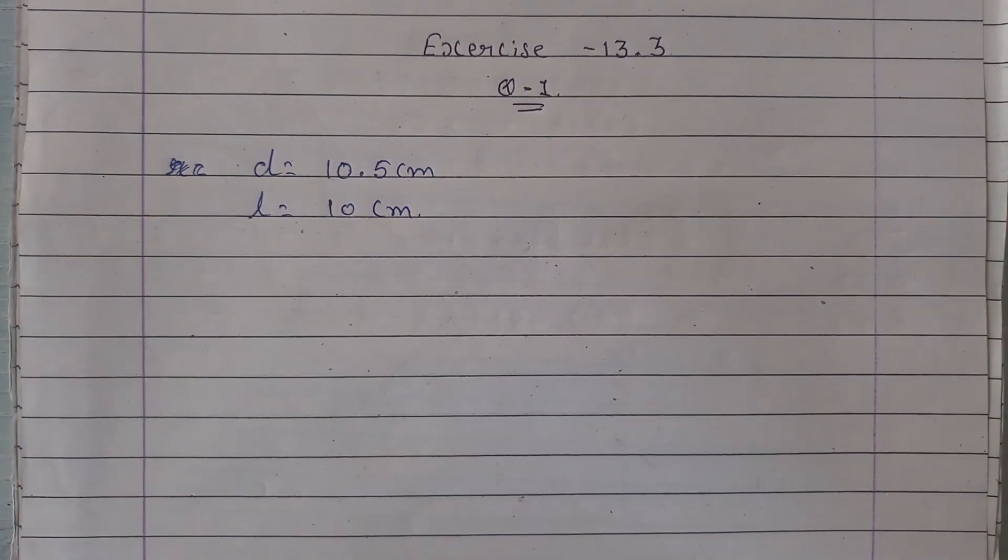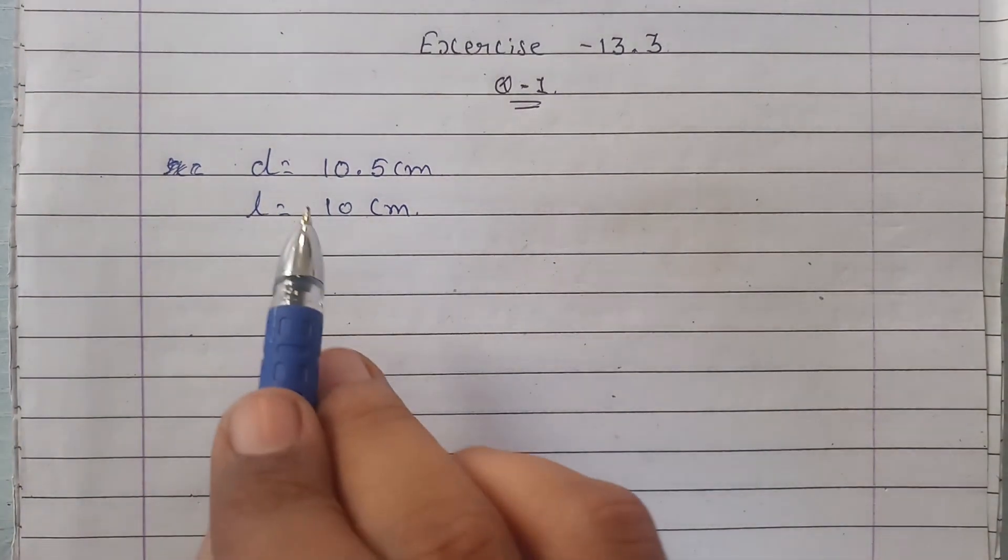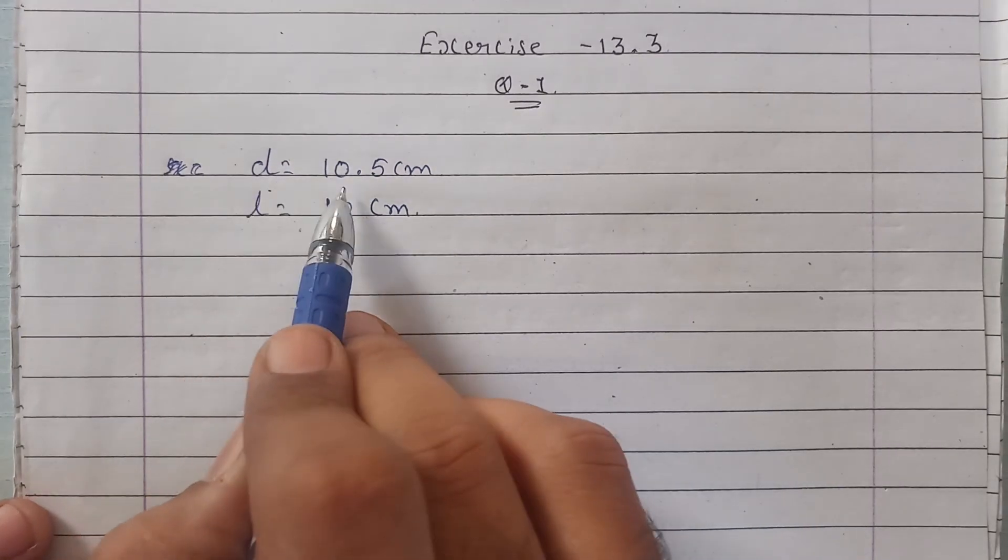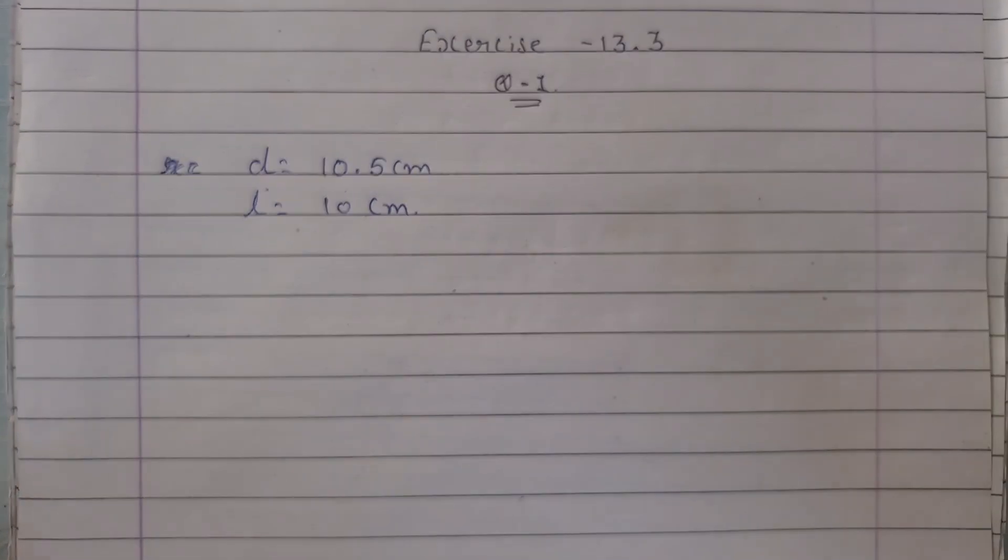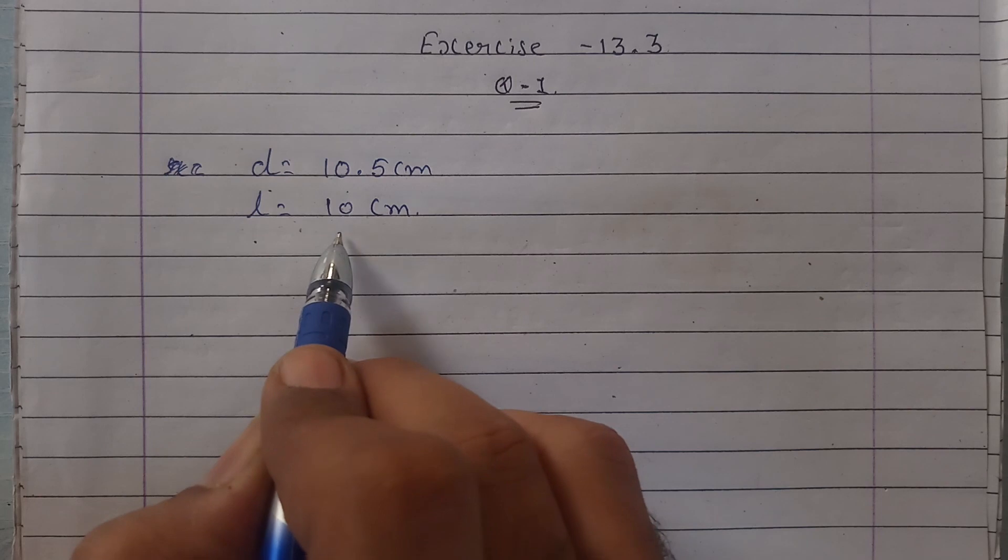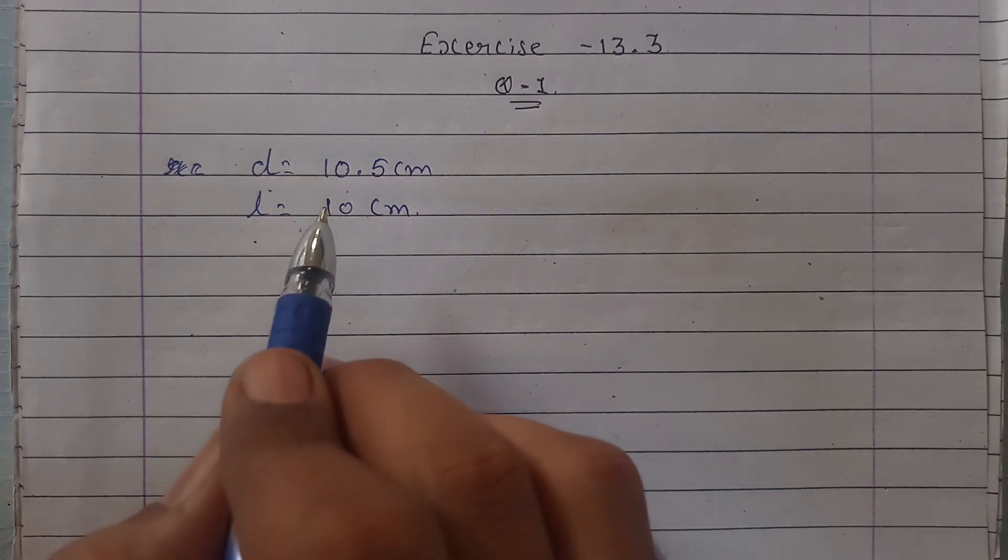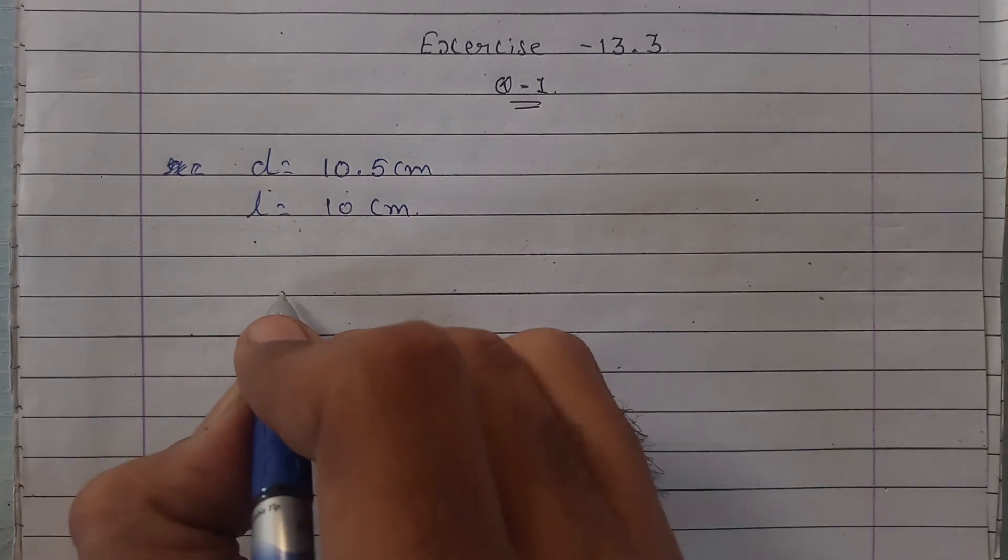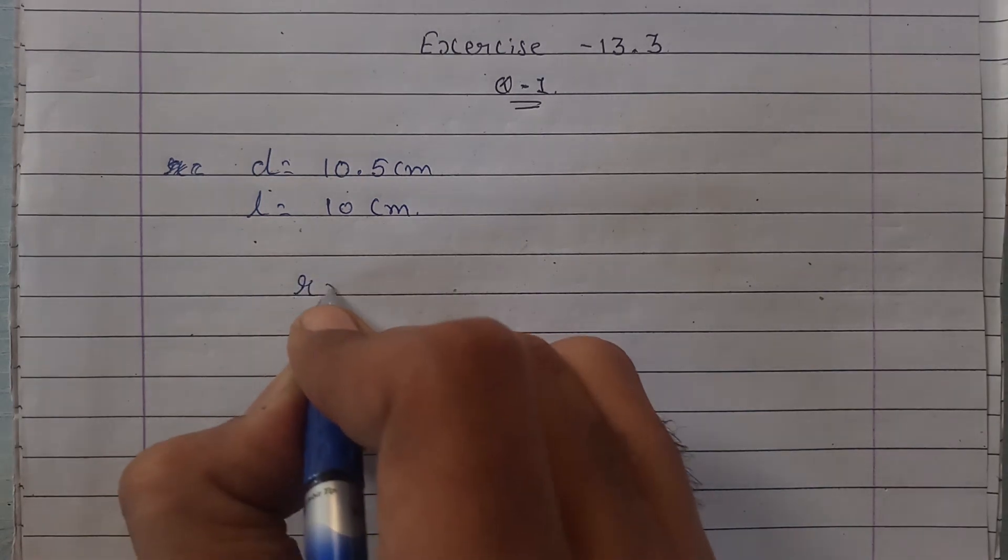As we have seen in the question, here what we have given is for a cone, diameter is given as 10.5 centimeters and the slant height l is given as 10 centimeters.